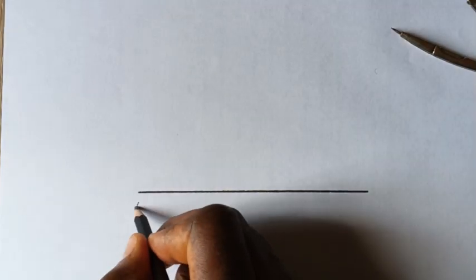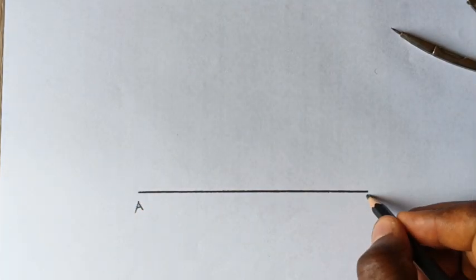So now once you draw a horizontal line, you label this point as your point A and here is your point B.